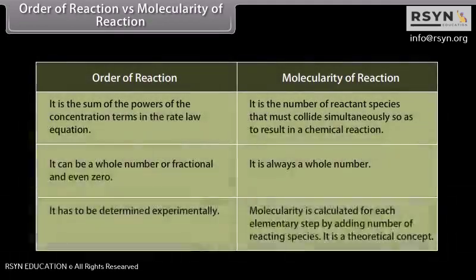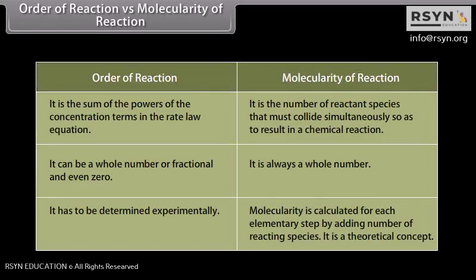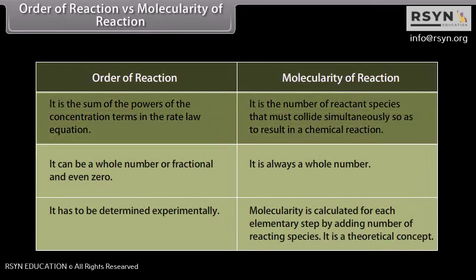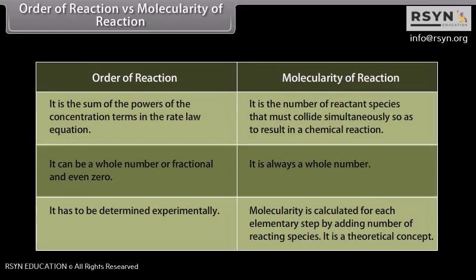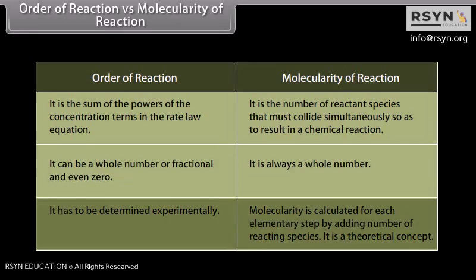Order of reaction versus molecularity: order of reaction is the sum of the powers of concentration terms in the rate law equation, whereas molecularity is the number of reactant species that must collide simultaneously to result in a chemical reaction. Order can be a whole number, fractional, or even zero, whereas molecularity is always a whole number. Order must be determined experimentally, whereas molecularity is calculated for each elementary step by adding the number of reacting species — it is a theoretical concept.